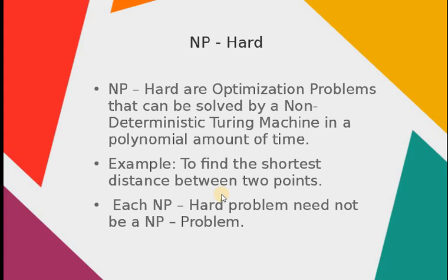An example of an NP-hard problem is to find the shortest distance between two points. Consider a scenario where you have to travel from point A to B and you have four paths to reach the destination. To calculate the shortest path, the deterministic Turing machine would check the distance for each path sequentially then return to the original point. Here, the complexity of the machine increases by four times.